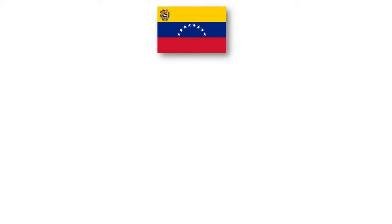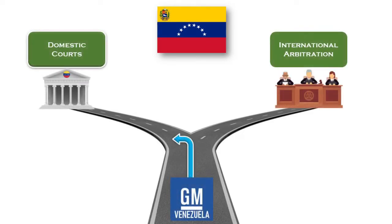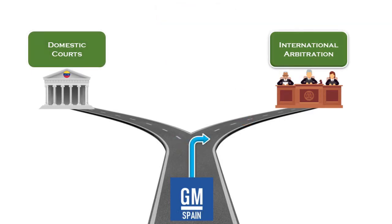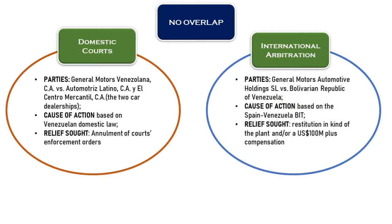On the other hand, Venezuela may argue in her defense that the dispute resolution provision under the Spain-Venezuela BIT may contain a fork-in-the-road provision, meaning that since GM Venezuela already litigated this subject matter before Venezuelan courts, it could not resubmit the same dispute to an international arbitration. Nevertheless, this objection can be easily rebutted because it is not the same dispute, as the disputing parties, the causa petendi, and the petitum do not overlap. In the international arbitration, GM Spain will be the claimant, whereas the party involved before Venezuelan courts was GM Venezuela litigating against two car dealerships. Additionally, the Spanish company's claims will be based on the Spain-Venezuela BIT rather than Venezuelan national law, so the cause of action will differ.